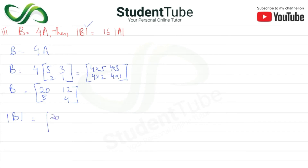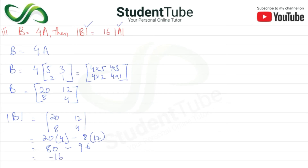Now we find the determinant of B. det(B) = 20×4 minus 8×12. That gives us 80 minus 96, which equals minus 16.